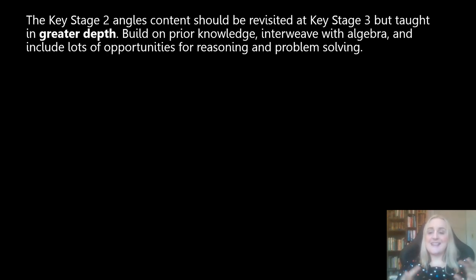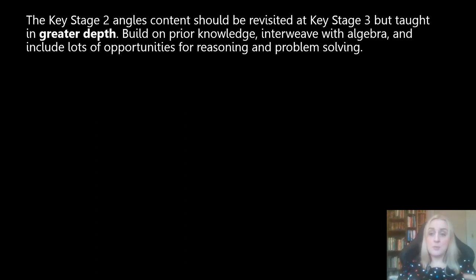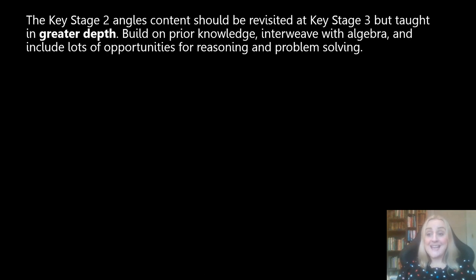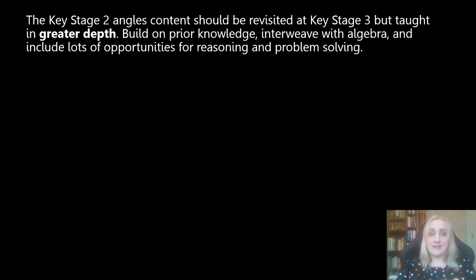The Key Stage 2 angles content really should be revisited at Key Stage 3. I wouldn't skip it totally and just start on angles in parallel lines. I would revisit some of those angle facts they've learnt before, but go into greater depth, add challenge, and build on their prior knowledge. Interweave it with algebra — this is a really good opportunity to do some equation solving. For example: the angles in a triangle are x, 2x and 3x, what is x? That kind of thing is great in Year 7, bringing in existing angle knowledge and interweaving it with new algebra. There are loads of opportunities for problem solving and reasoning because students have done a lot of work on angles before.